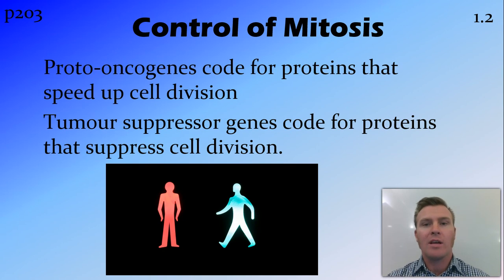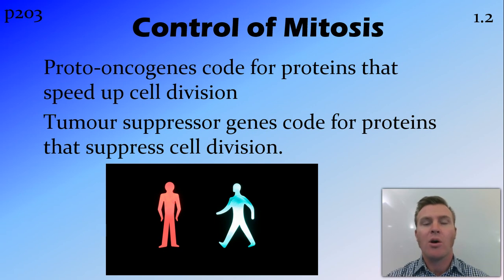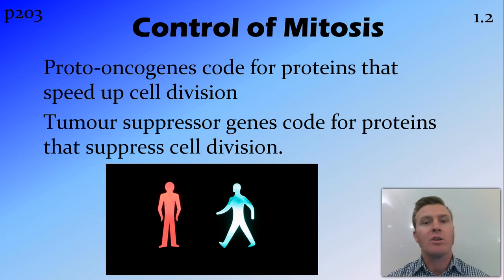The way that we control the speed of mitosis is through two different classes of genes. We have what are called proto-oncogenes, which speed up cell division, as well as tumour suppressor genes, which slow down cell division, making sure that it's kept at this perfect level.